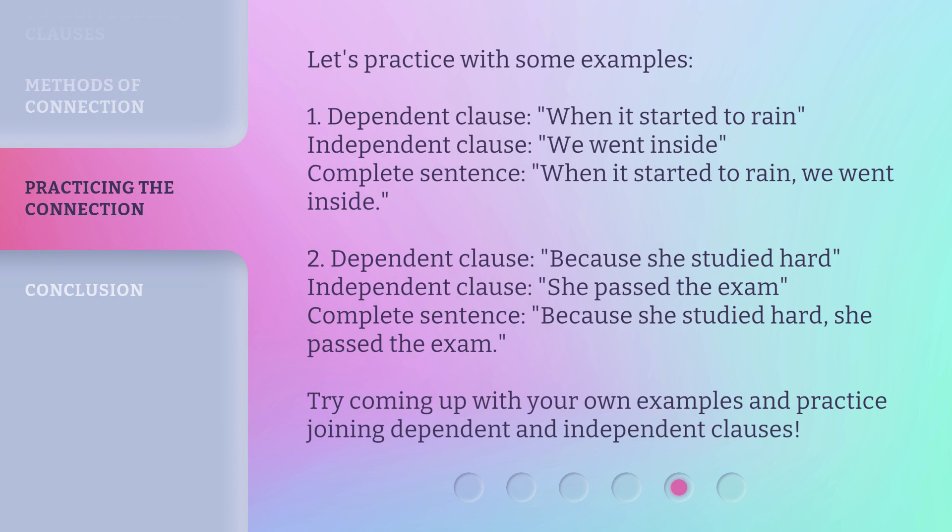Let's practice with some examples. 1. Dependent clause: 'When it started to rain.' Independent clause: 'We went inside.' Complete sentence: 'When it started to rain, we went inside.' 2. Dependent clause: 'Because she studied hard.' Independent clause: 'She passed the exam.' Complete sentence: 'Because she studied hard, she passed the exam.' Try coming up with your own examples and practice joining dependent and independent clauses.